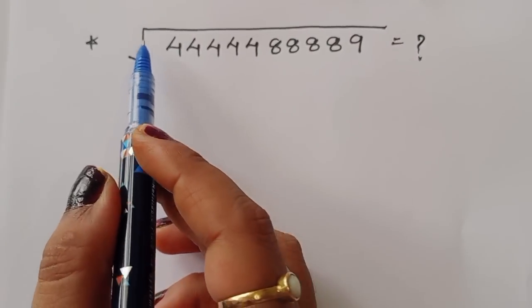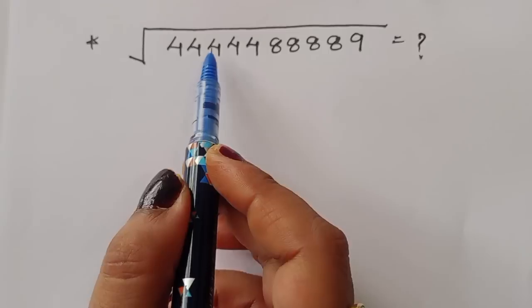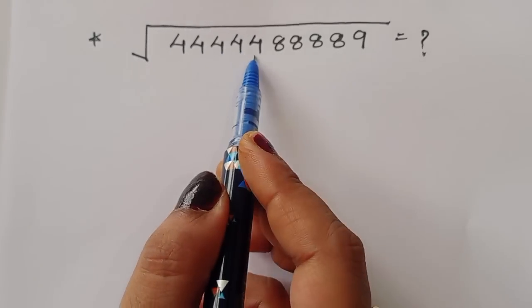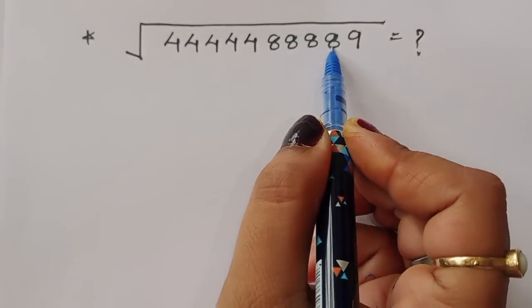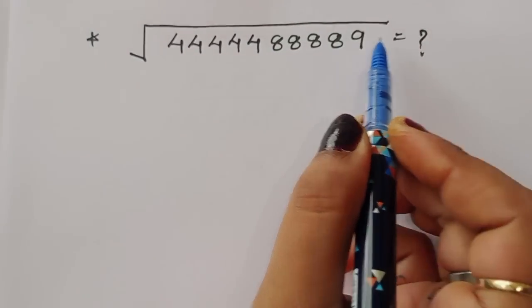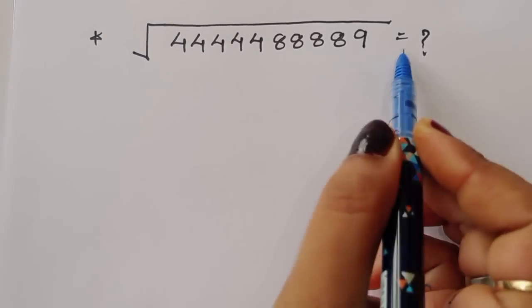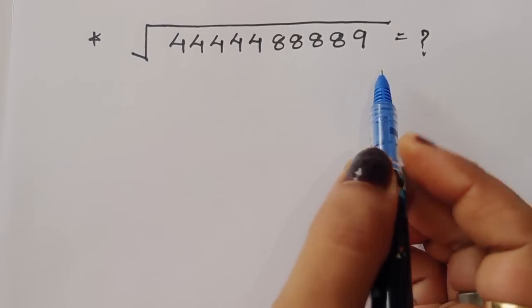The question is: given square root of 12345 times 54321 times 89 is equal to what. We have to find out the value of this term. Let's see the solution.